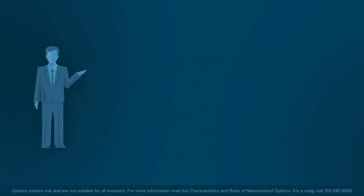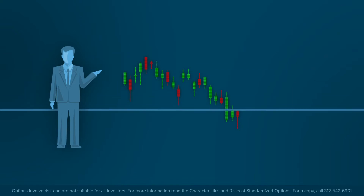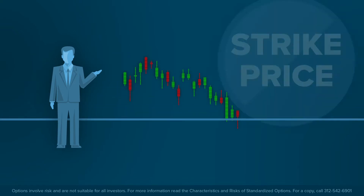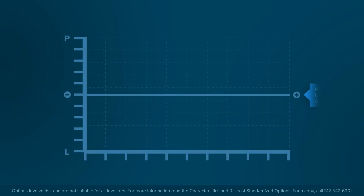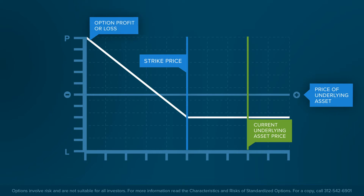Put options convey to the buyer the right, but not the obligation, to sell a set number of shares of an underlying asset at a predetermined price, the strike price, prior to the time that the option contract expires. A put option buyer does this with the expectation that the price of the underlying asset will fall at some point in the future.